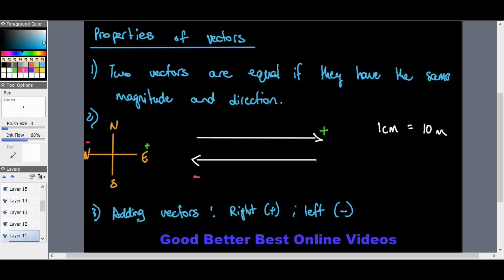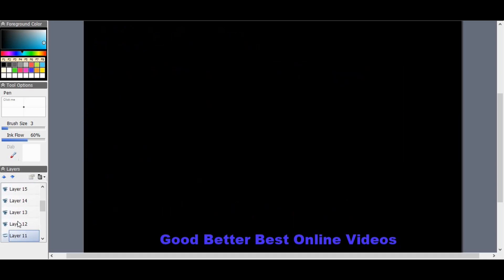We also add vectors using graphical methods. Although I've shown how to draw a vector, there are two types of graphical methods for adding vectors, usually displacement.